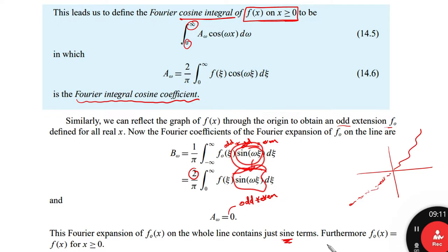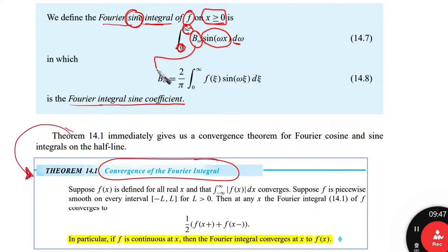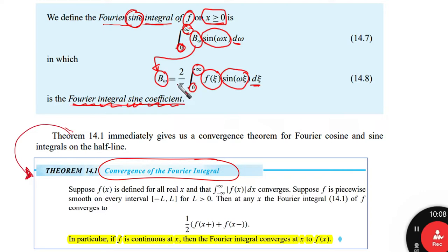Since the odd function equals f(x) for x ≥ 0, the function is represented by sine integrals on the positive half-line. We define the Fourier sine integral of f(x) on x ≥ 0 as ∫₀^∞ b(ω) sin(ωx) dω, where the sine coefficient is b(ω) = (2/π) ∫₀^∞ f(z) sin(ωz) dz.